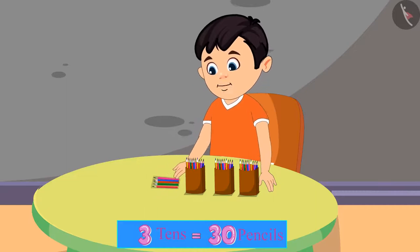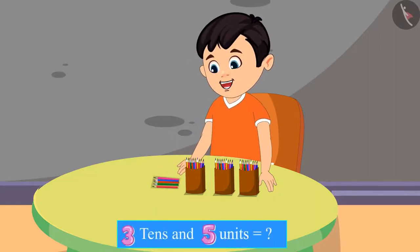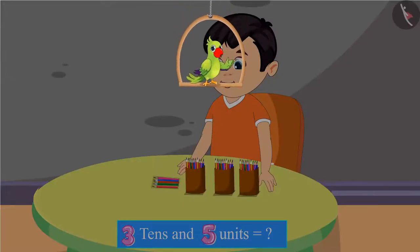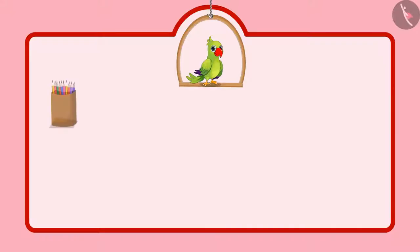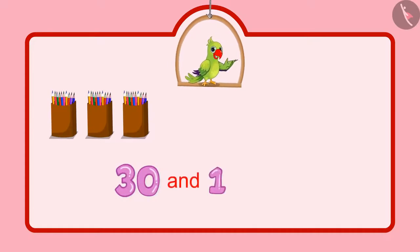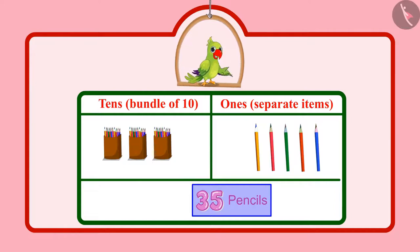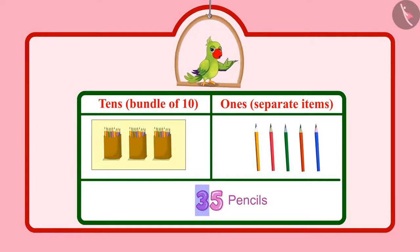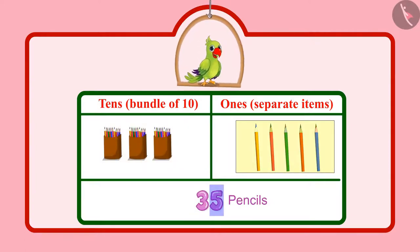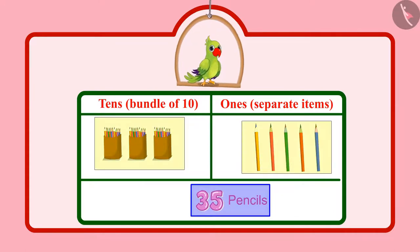And here are my 5 old pencils. So, 30 pencils with 5 more pencils, meaning 5 units more. Children, can you tell me how many pencils does Chotu have now? Chotu had 30 pencils, followed by 31, 32, 33, 34, 35. So, Chotu has 35 pencils in total. In 35 pencils, 3 means 3 tenths and 5 means 5 units, which means total 35 pencils.